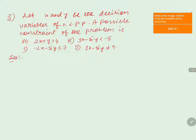Let x and y be the decision variables of a Linear Programming Problem (LPP). We need to identify a possible constraint of the problem from the given options.